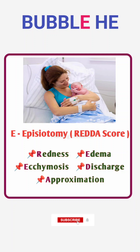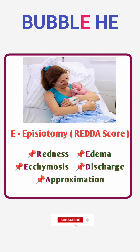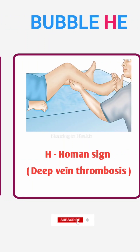E means episiotomy. Assess the perineal area for healing and signs of infection. Evaluate for any pain, swelling, or bruising. Check the REEDA score — meaning redness, edema, ecchymosis, discharge, and approximation. Provide advice on wound care and pain management.